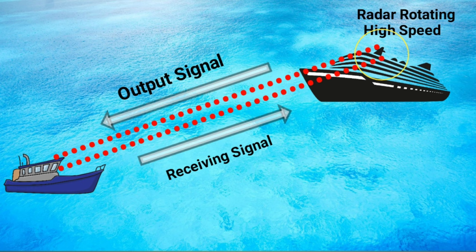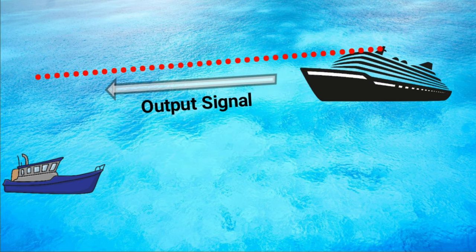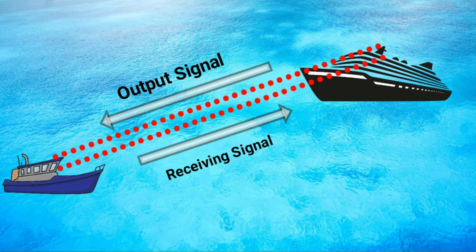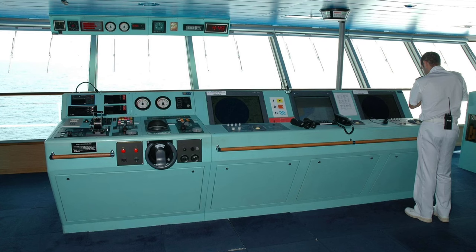The radar system emits electromagnetic waves as a high-speed signal which travel several miles in the direction the radar is facing. If there are no objects in the direction of the wave, the radar screen will show blank. If there is an object, it will reflect the wave back to the radar, and the computer setup of the radar will determine the distance between the ship and the object.